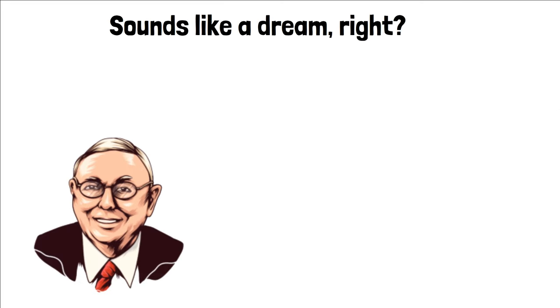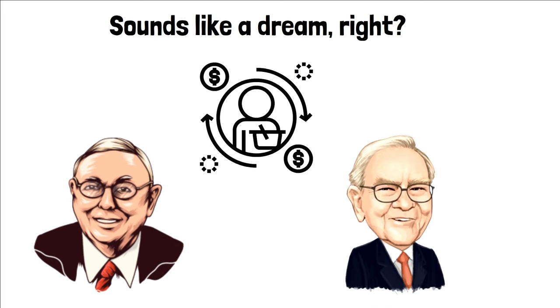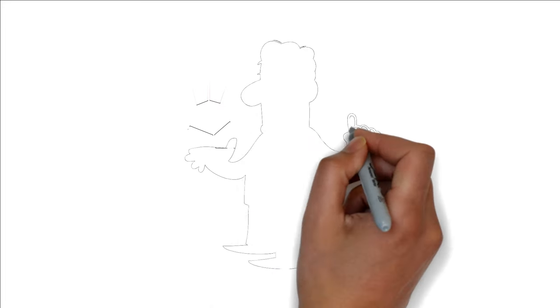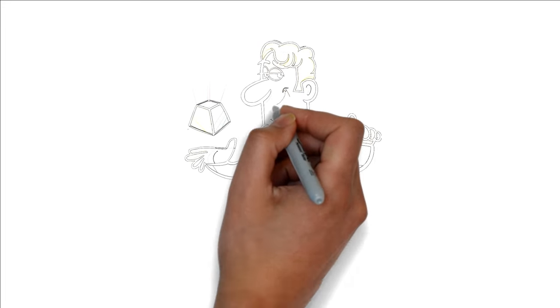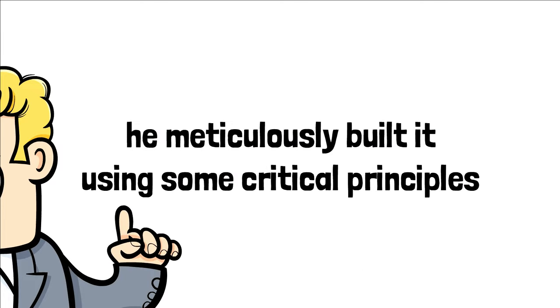But for Charlie Munger, one of the most brilliant investors of our time and Warren Buffett's right-hand man, it's more of a science than a fantasy. With a career spanning decades, Munger didn't just stumble upon wealth. He meticulously built it using some critical principles.